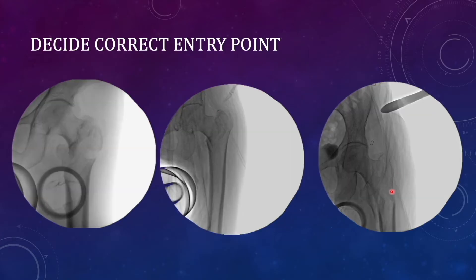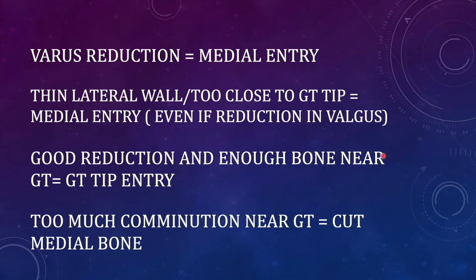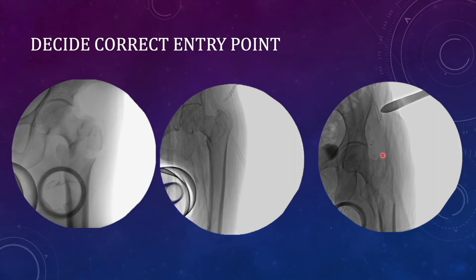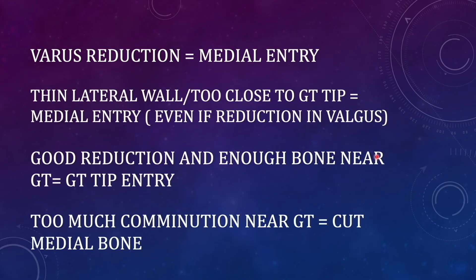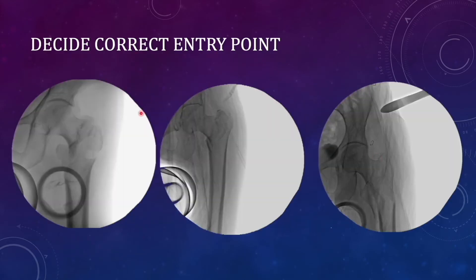For example, if the fracture line is below the trochanteric area and that part is still intact, you can go for trochanteric tip entry. But be cautious — your reduction must be in valgus when going for this kind of entry in subtrochanteric fractures. If your reduction is in varus, definitely go for medial entry. Whenever there is comminution near the trochanteric tip, it is very difficult to pass through medial entry. Use an awl placed on the medial bone and hammer it to remove the bone just medial to the trochanteric tip, otherwise this bone will hinder compression at the fracture site.